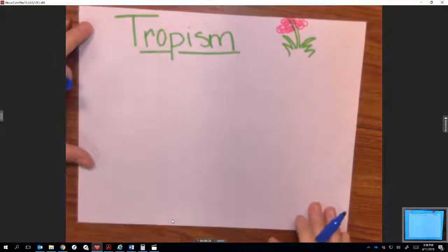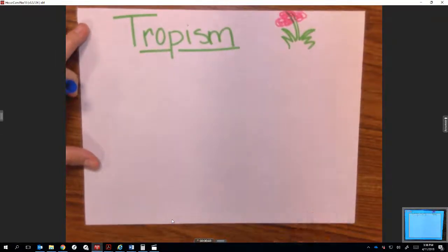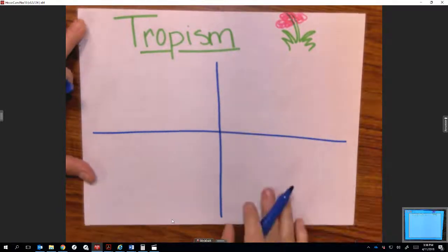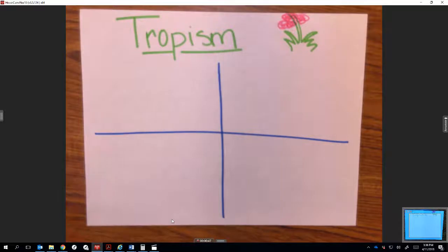If you'd like to follow along, get out a piece of paper and some markers or colored pencils. I'm going to divide my paper into four sections. The first one we're going to talk about is phototropism.